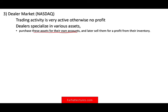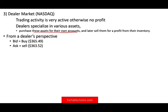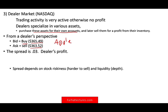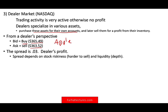From a dealer's perspective, they have a bid price and an ask price. The bid price is what they're willing to pay — for example, buying Apple stock at $365.49. If you want to buy from them, they'll sell it at $365.52. The difference — three pennies — is the spread, which is the dealer's profit. The spread depends on the riskiness of the stock: if the stock lacks liquidity or market depth, the spread is higher because the dealer is taking on more risk.